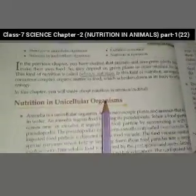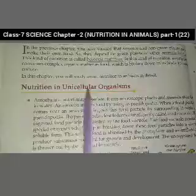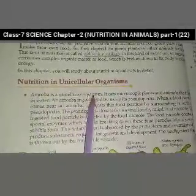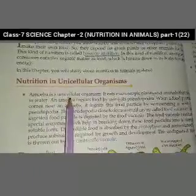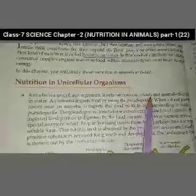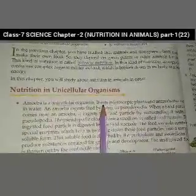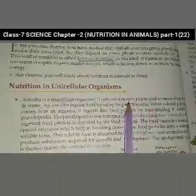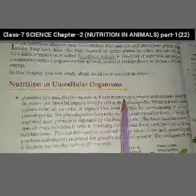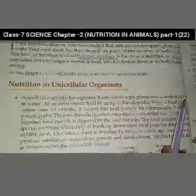Now our first topic is Nutrition in Unicellular Organisms. Unicellular means single cell. Amoeba is a unicellular organism — it has only one cell. It eats microscopic plants and animals that float in water, which we cannot see with the naked eye and must observe through a microscope.